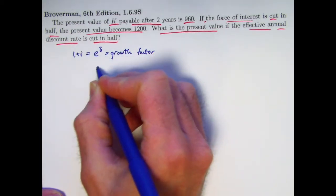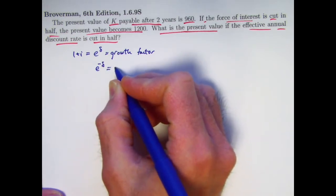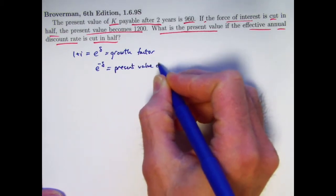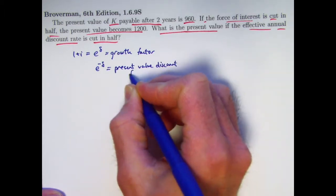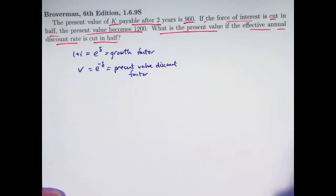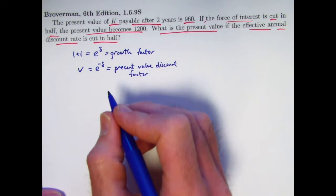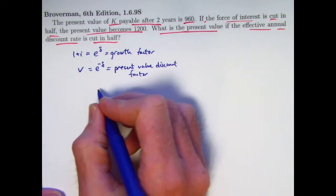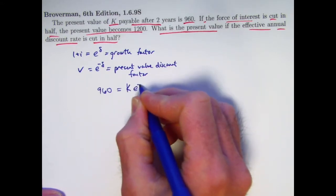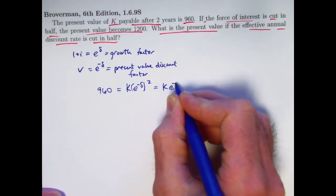Go ahead and write that. e to the negative delta is going to be the present value discount factor. It's the same thing as V that we've seen in previous videos. To say the present value of K that's going to be two years from now is 960 is to say that 960 equals K times e to the negative delta squared, which is K times e to the negative 2 delta.